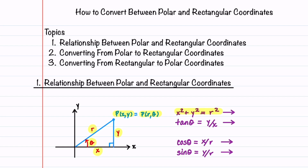We know from the Pythagorean theorem that x² + y² = r². If we take the square root of both sides, we find that r = √(x² + y²). We also know that tangent of theta equals the opposite side over the adjacent side, so it's equal to y over x. We can solve this equation for theta and get that theta = arctan(y/x).